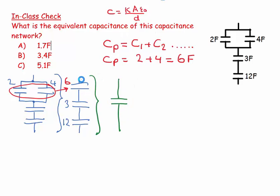So basically I am combining these three guys to make that. And how do I do that? Well, the other equation is one over C series is equal to one over C1 plus one over C2 plus one over C3, and